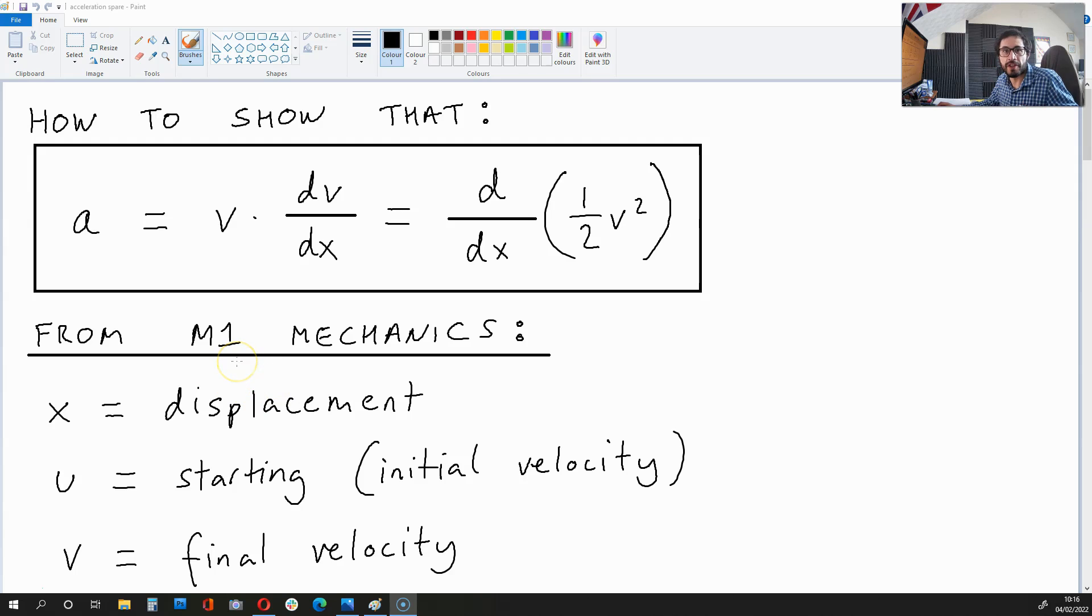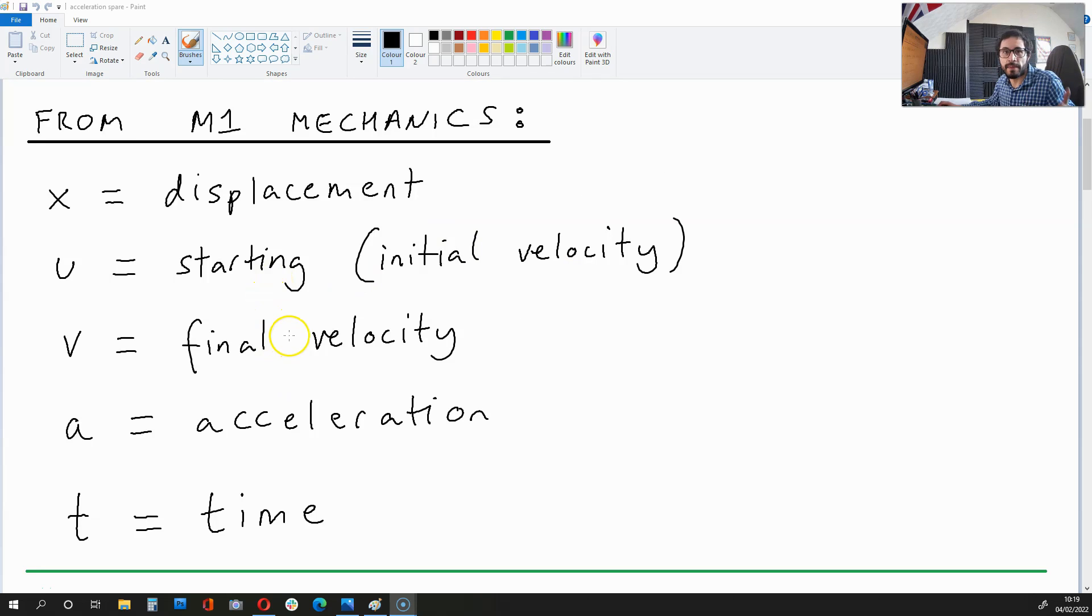Hello, in this video I'm going to be showing you why, in mechanics, a for acceleration is equal to v times dv over dx, or d dx half v squared.